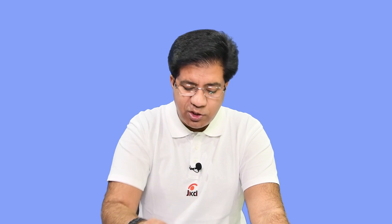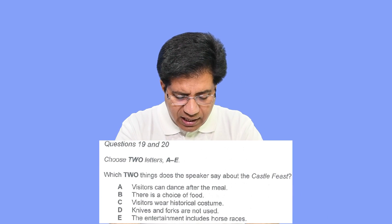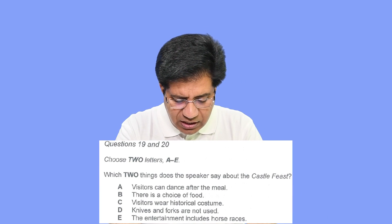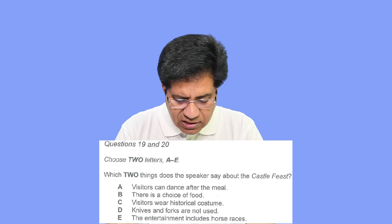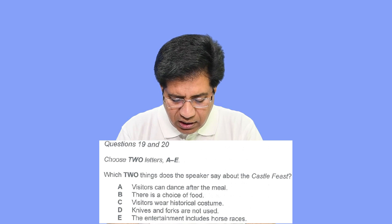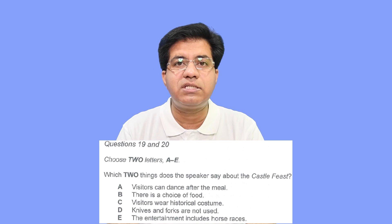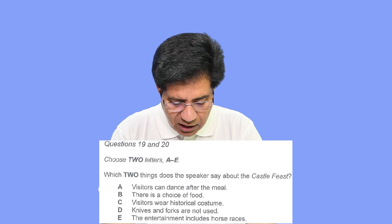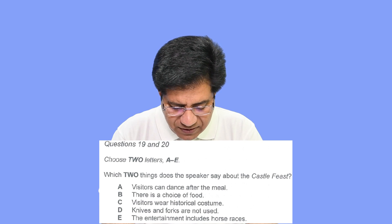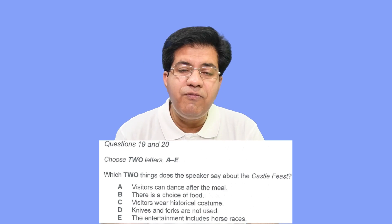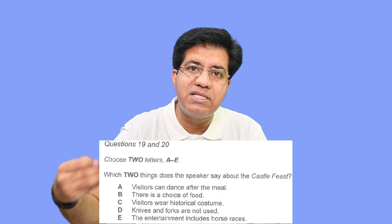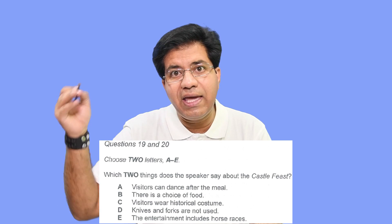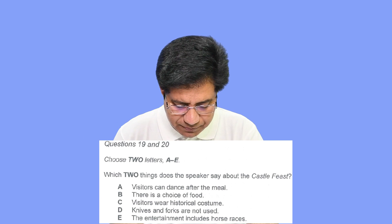You need to go to whichever option is being discussed. Now let's move on to questions 19 and 20: 'Which two things does the speaker say about the Castle Feast?' The second attraction is Castle Feast, and the speaker will say two things about it — the same rule and same principle apply.